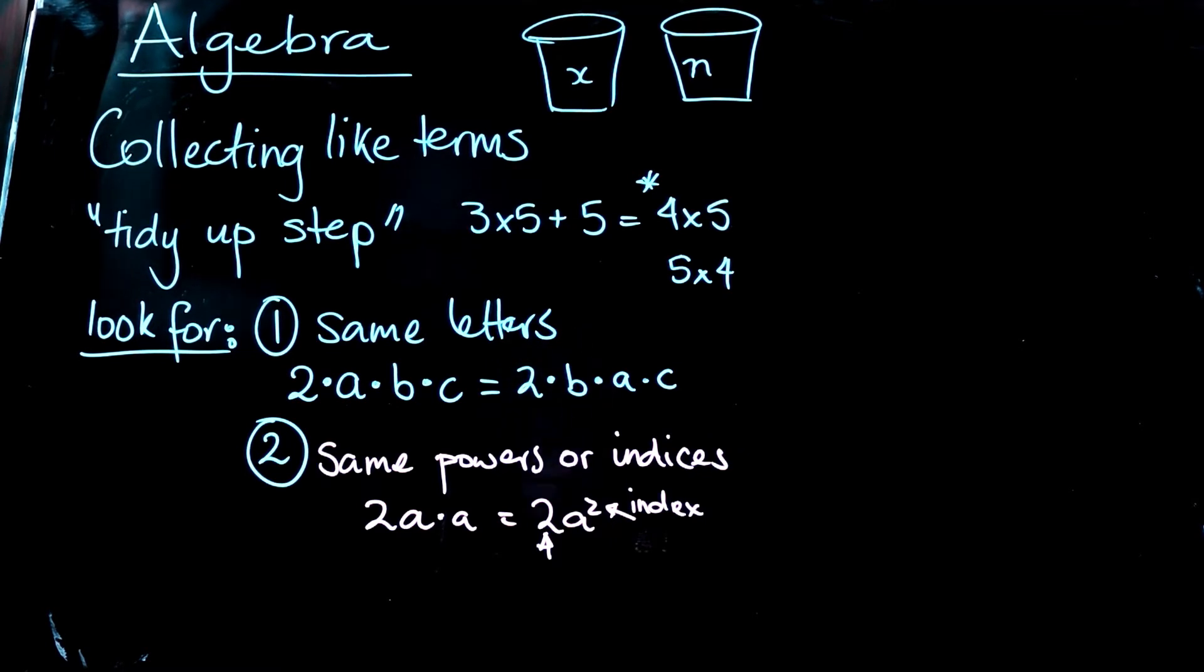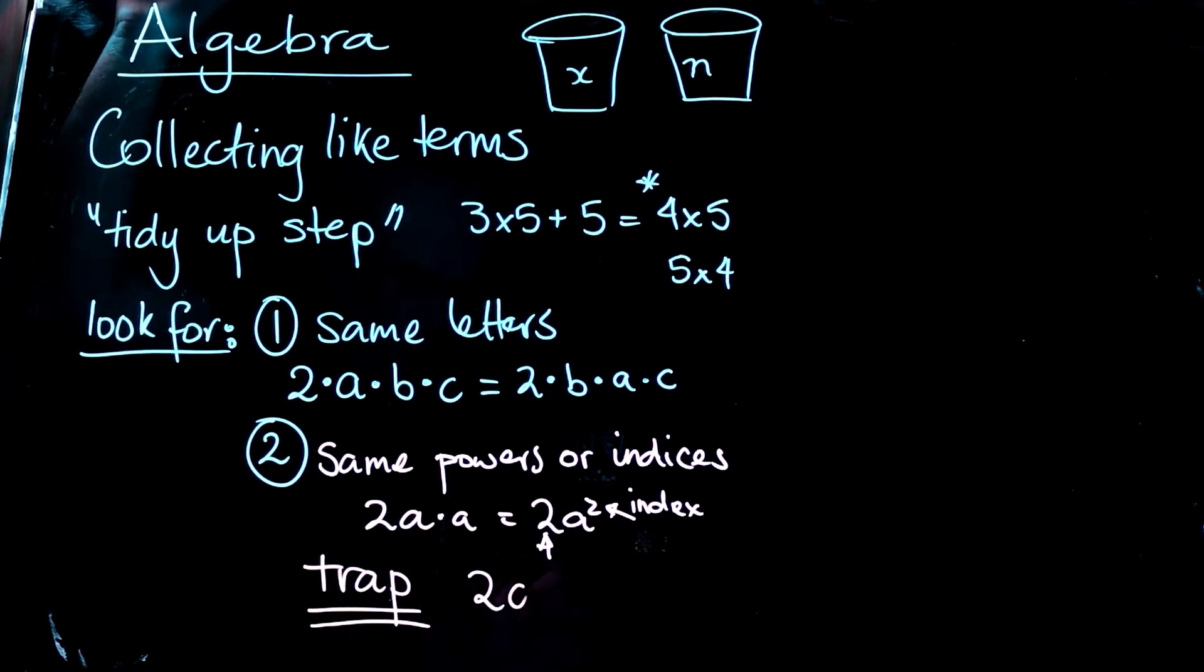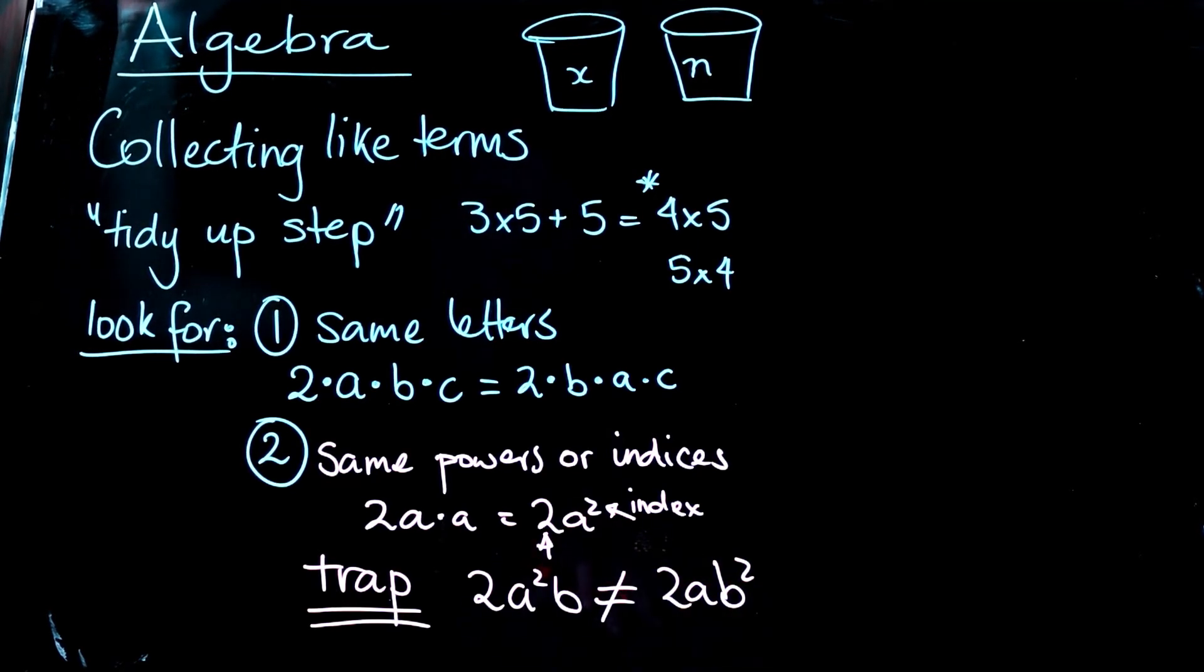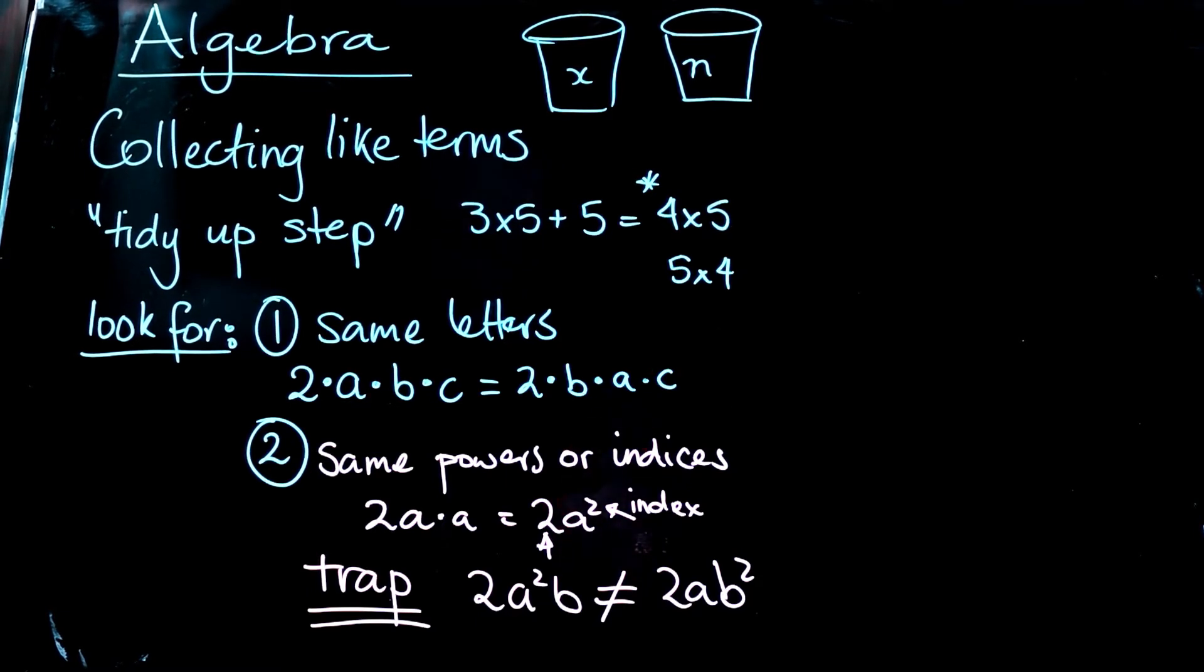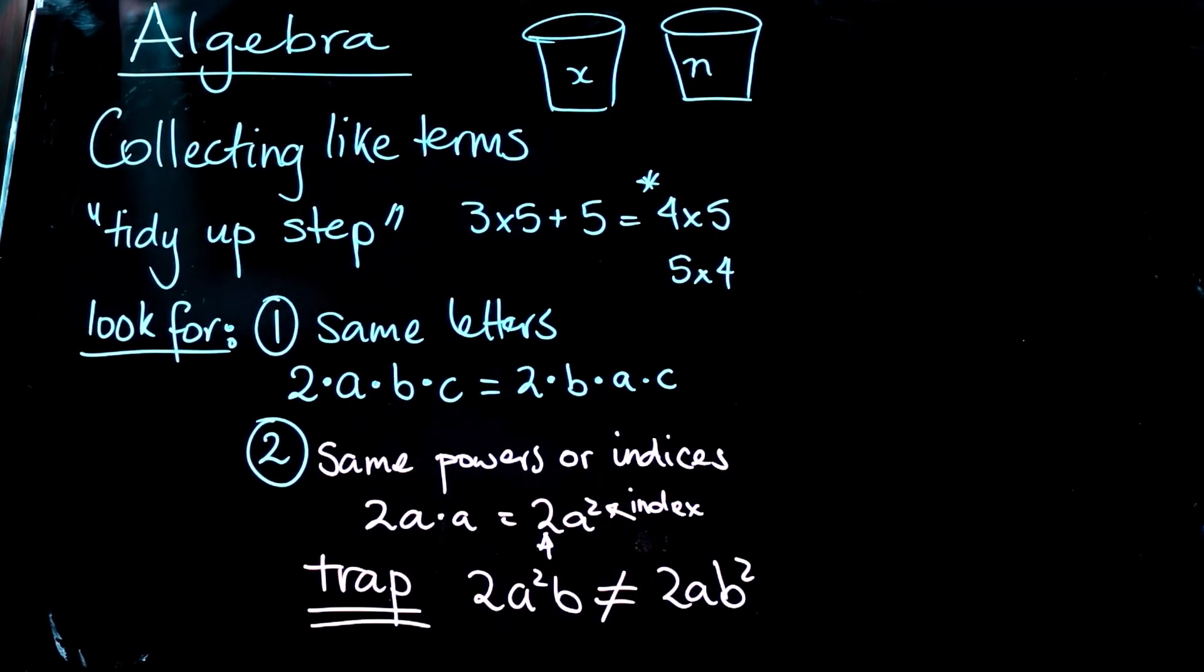Be really careful because here's the trap. You're looking at the questions and you see two A squared B. Now that's not the same as two AB squared. You can't collect those terms up. They are different terms and you have to be aware of that and watch out for those little numbers or those indexes. And then you should be right. You shouldn't make too many mistakes.